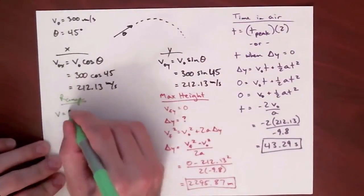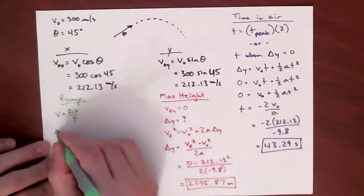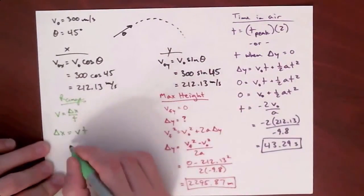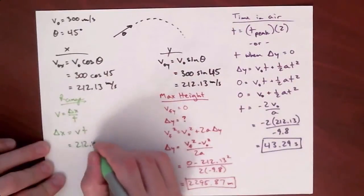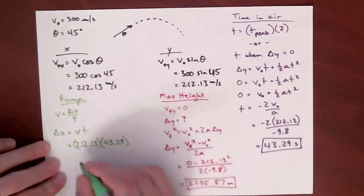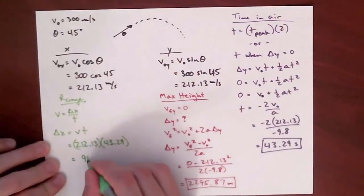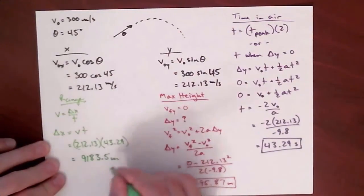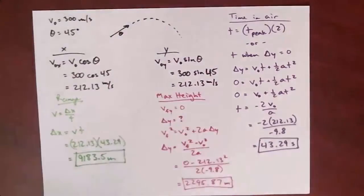Next we're looking for the horizontal range. There's no acceleration in the x direction, so we just plug in what we have into this equation and get our horizontal range.